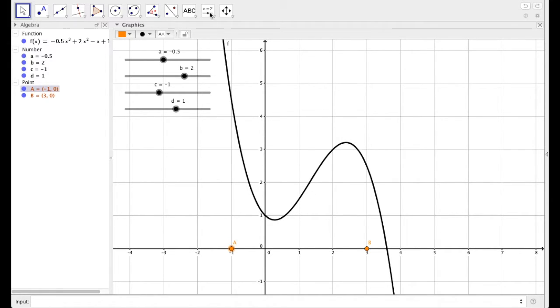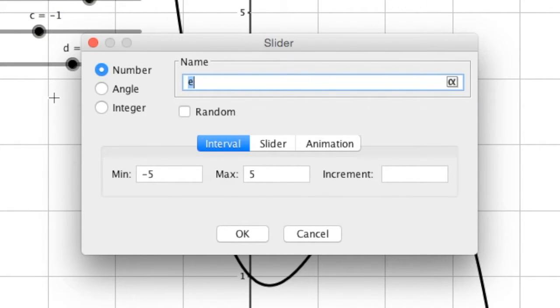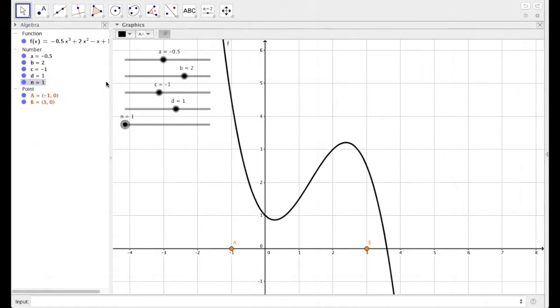We need to create another slider. So click on slider. Click down here just below d, and let's label this one n, and let's have it go from 1 to 50 by an increment of 1. We need these to be integers. So say OK. Click on n, and I actually want to color this one orange. And let's set n to be 5 for now.